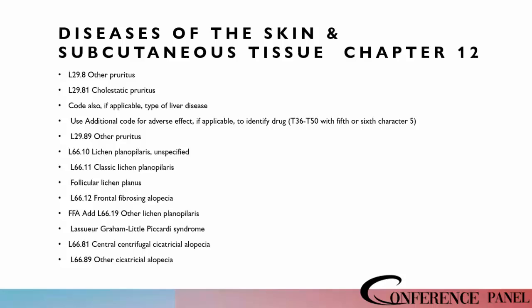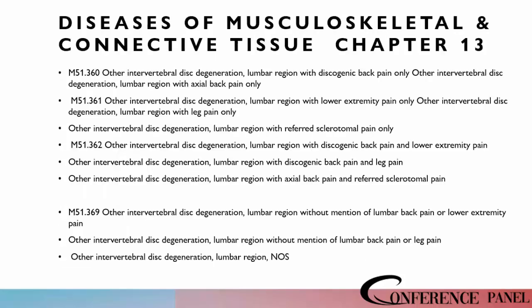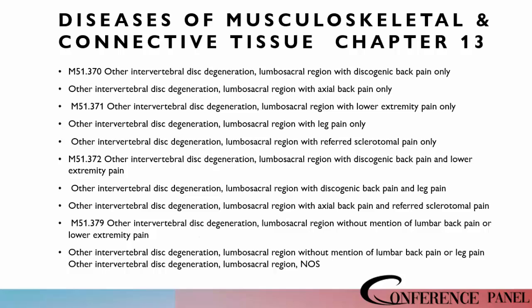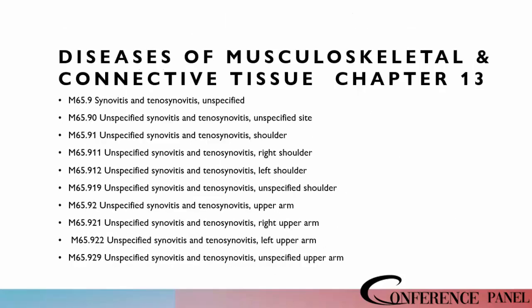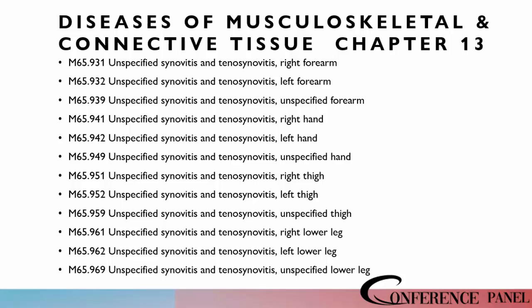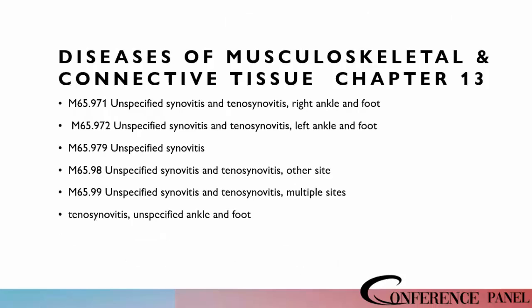Now we're moving into skin and subcutaneous tissue, chapter twelve. We've got new codes in this section. Now in the musculoskeletal and connective tissue chapter thirteen, the same circumstances apply. We're going to look at synovitis and tenosynovitis. We also now have codes for the right ankle and foot, and the left ankle and foot.